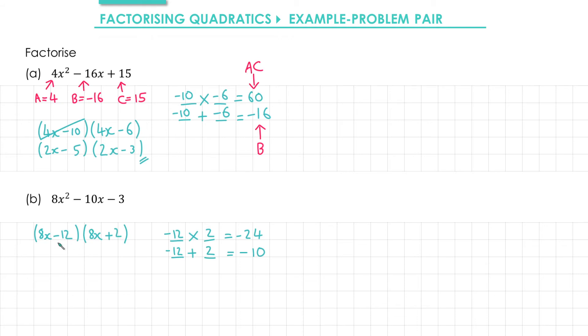At the moment this will be a factor of 8 too large, so we need to look to cancel. From the first bracket we can find a factor of 4. So let's divide both parts by 4, that gives us 2x minus 3. In the second bracket we have a factor of 2, so let's divide by 2, that gives us 4x plus 1. And that's our answer.